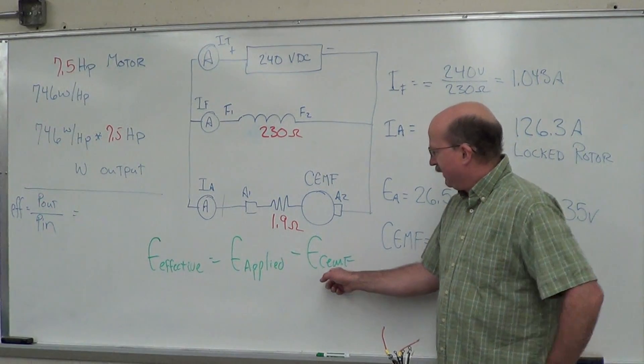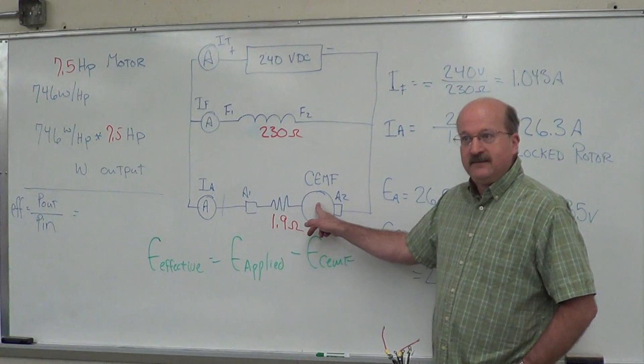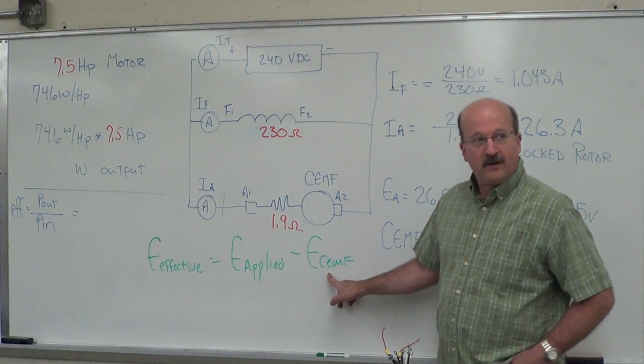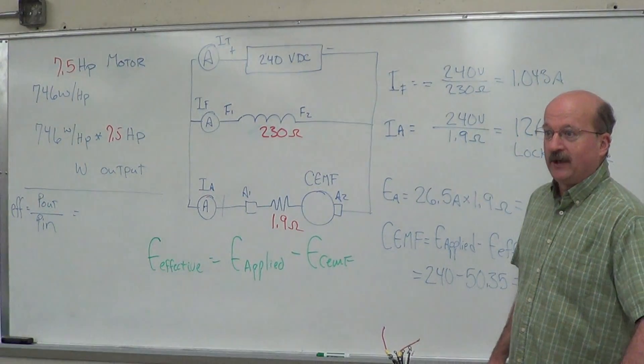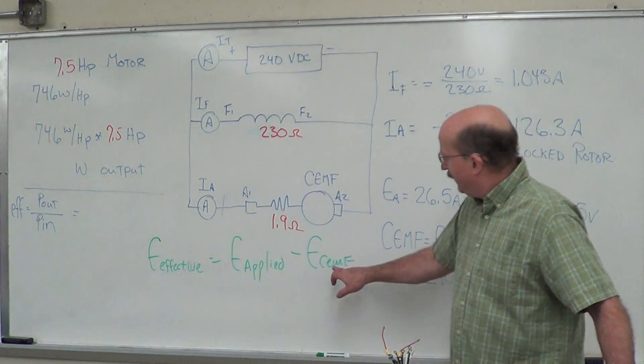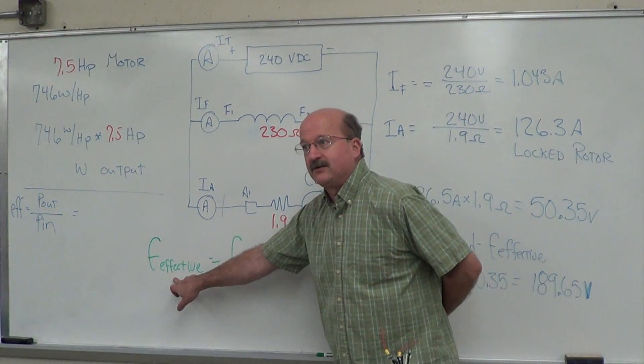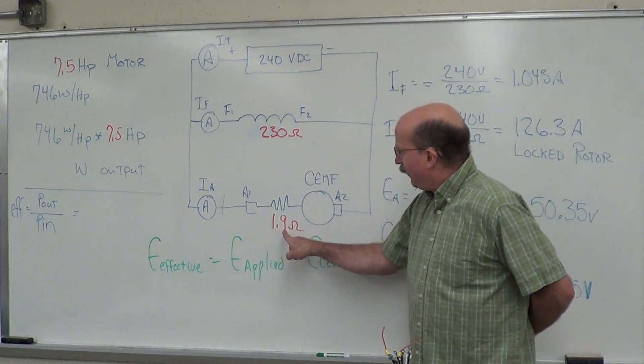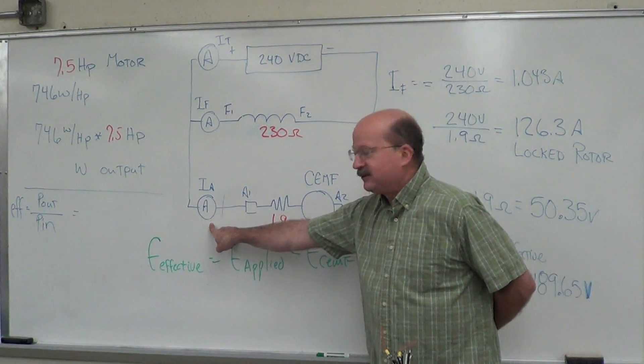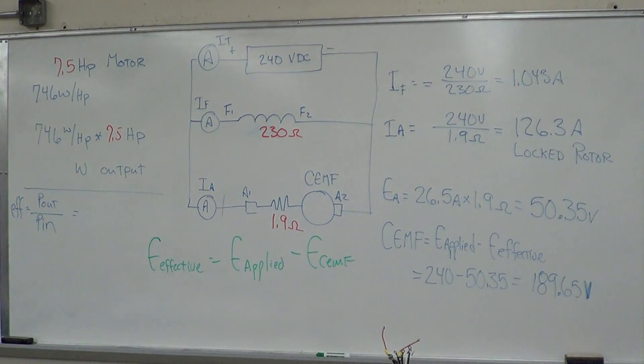So if we put a heavier load on here, the counter-EMF goes down because the RPM slows down, right? The RPM goes down, the counter-EMF goes down. If that goes down, what happens to our effective voltage? It goes up. If the effective voltage goes up, what happens to the current then? It goes up.